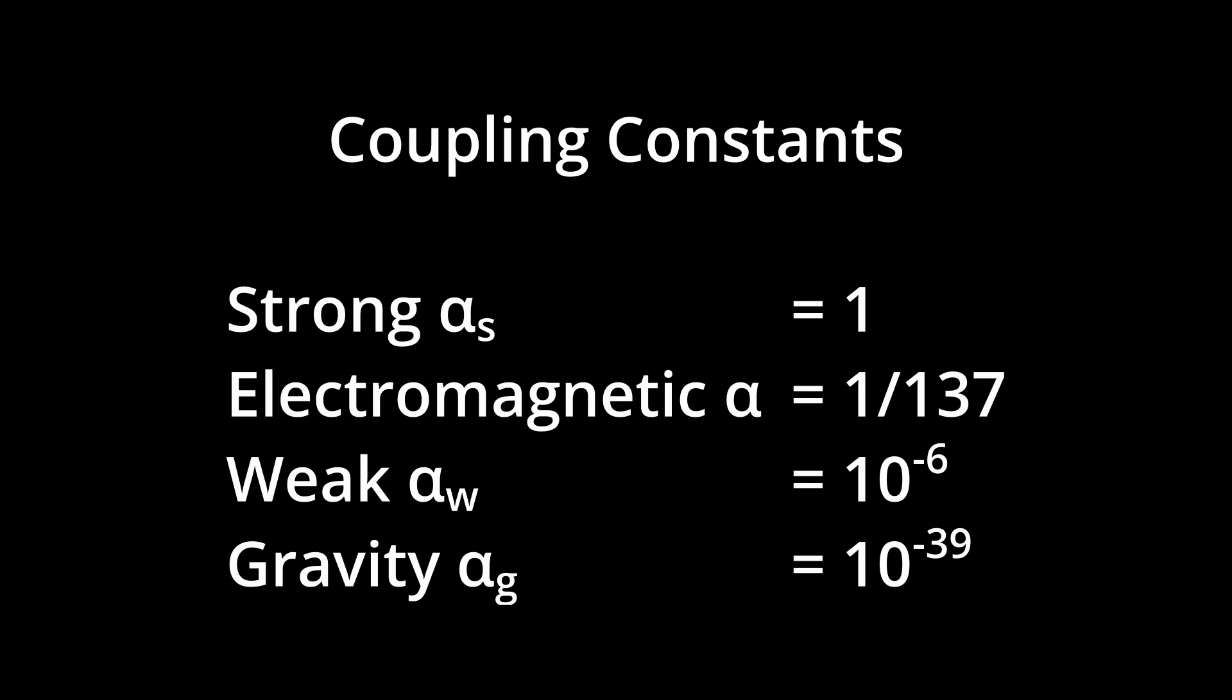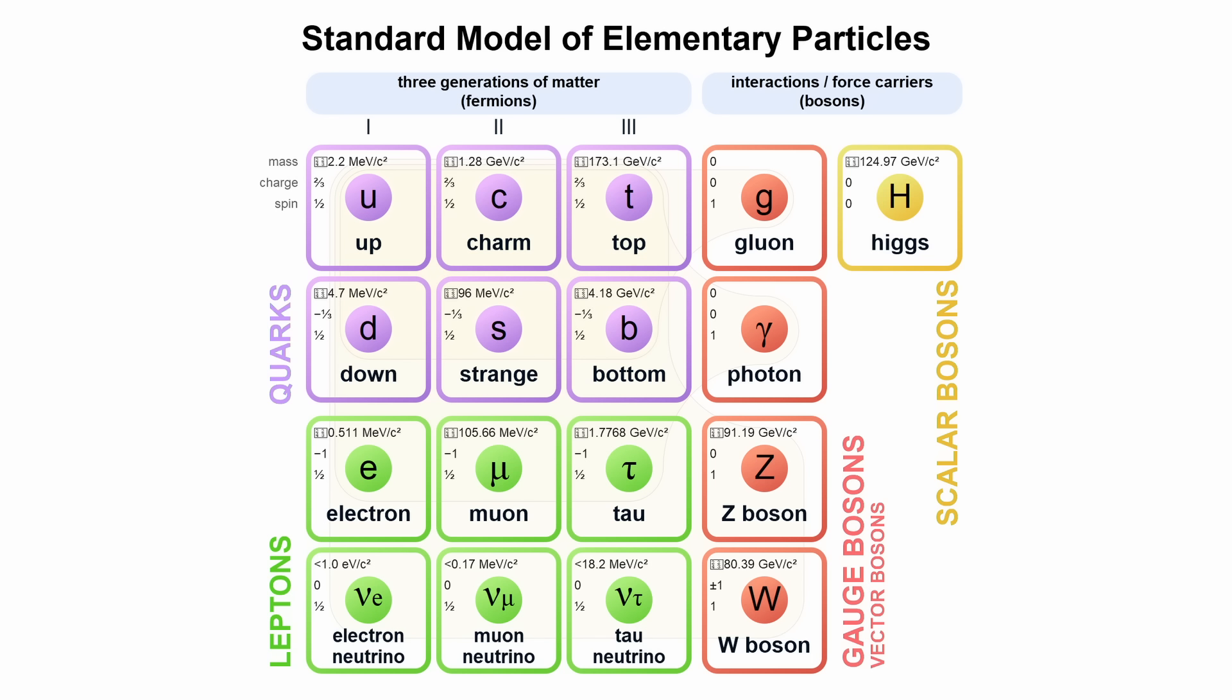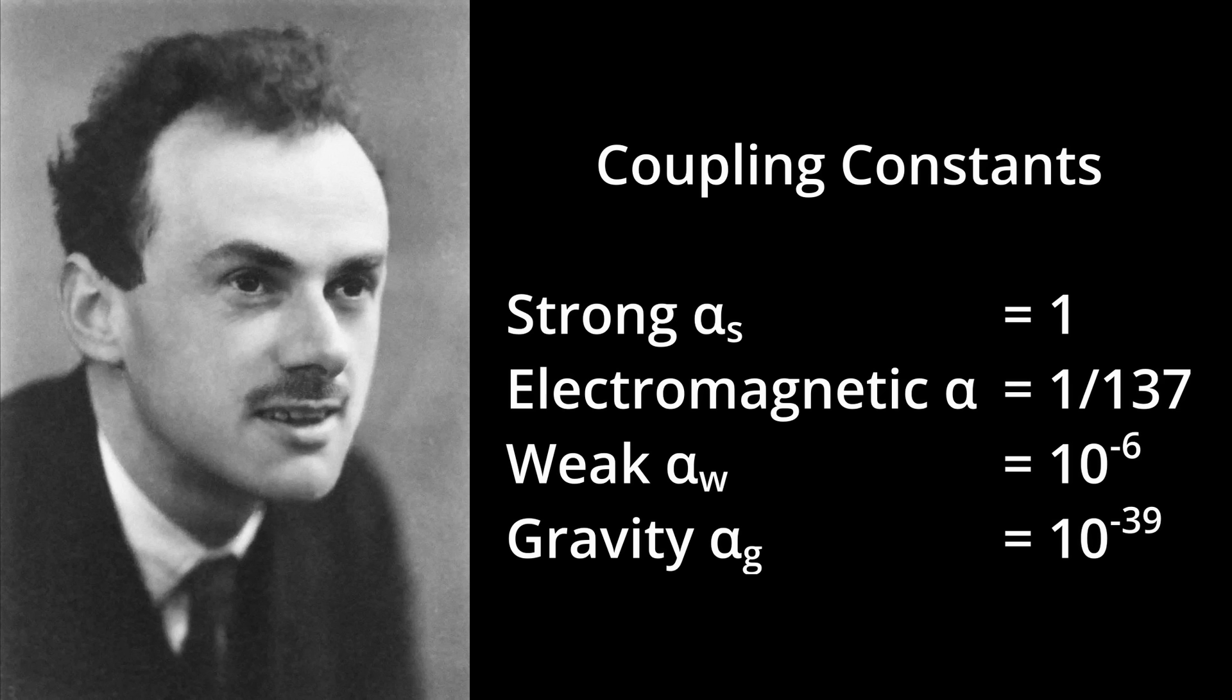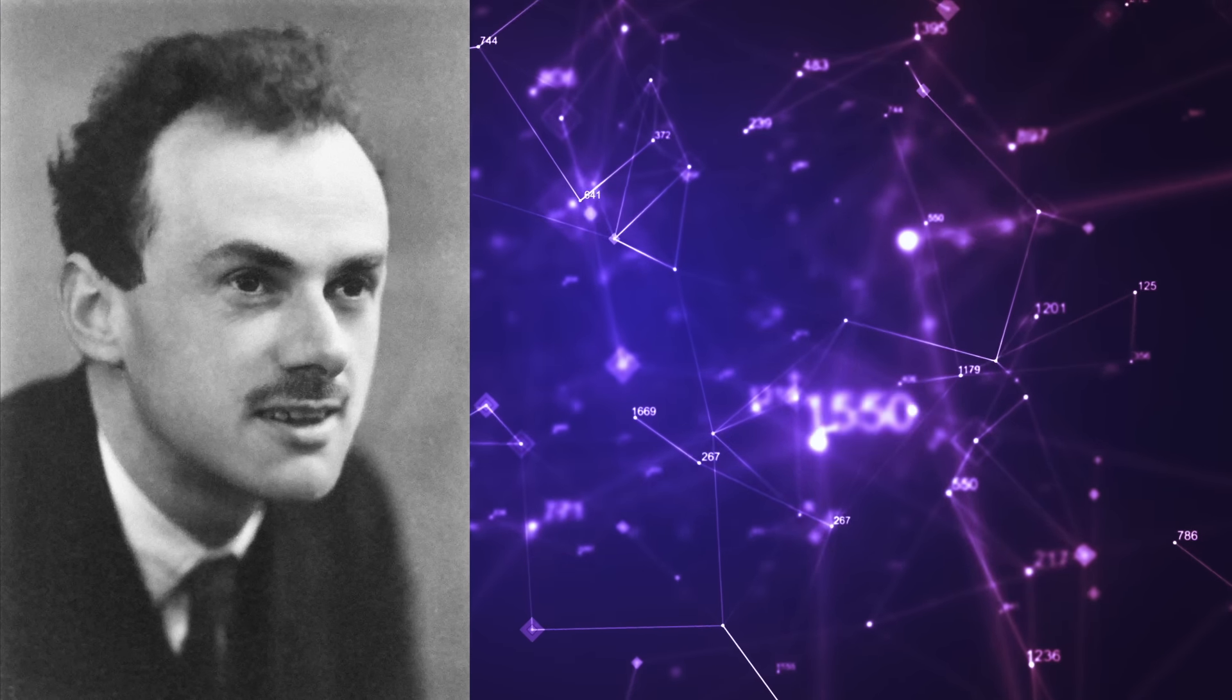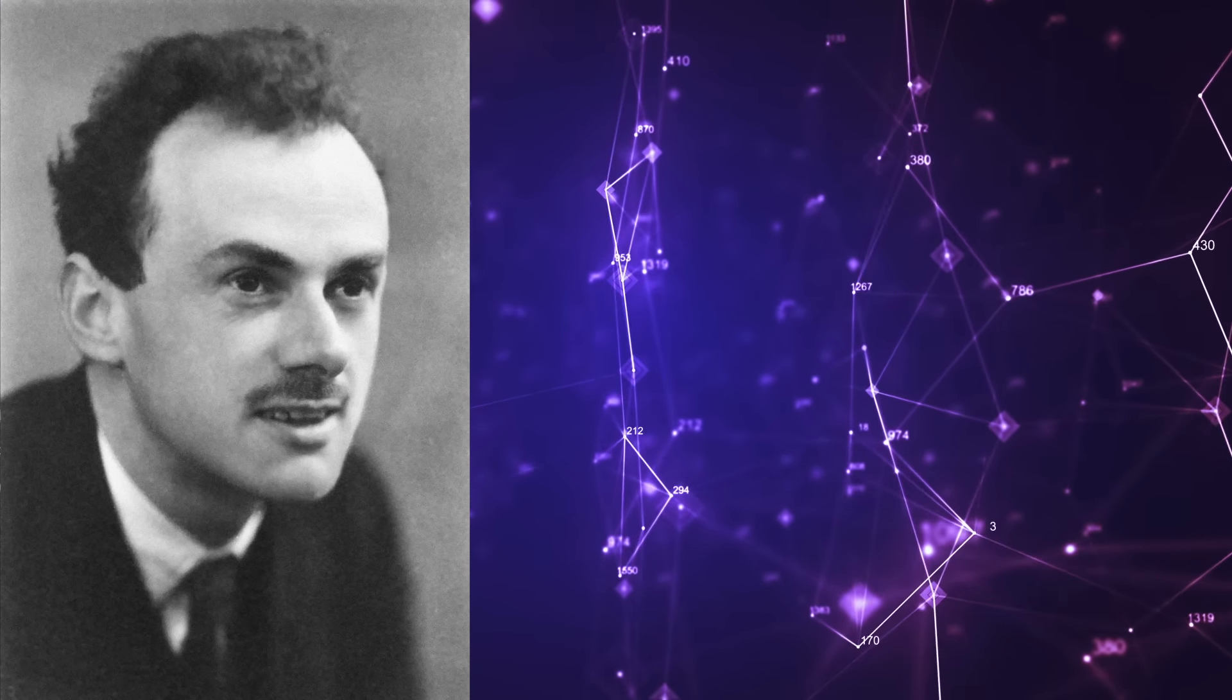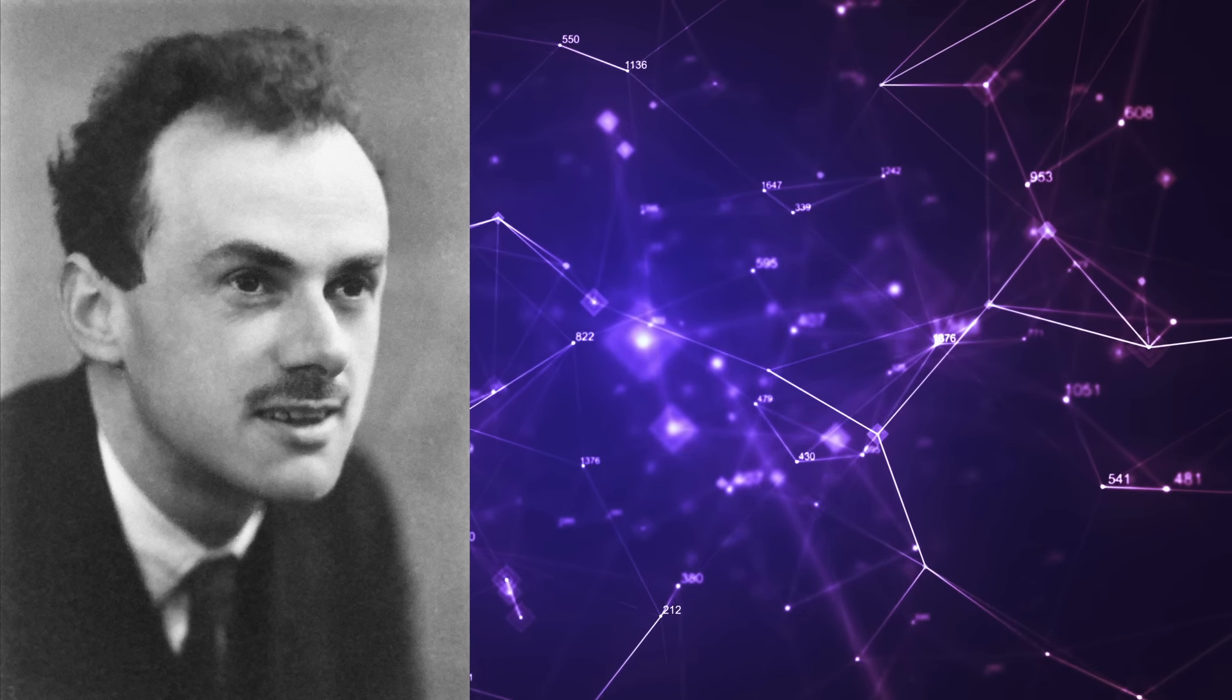In the realm of quantum field theory, coupling constants serve as pivotal metrics, delineating the intensity of interactions among diverse particles through the exchange of force-carrying particles. Dirac proposed the notion that the fundamental constants of nature, such as the coupling constants, might actually vary over space and time. This concept was in line with his broader philosophical outlook, which suggested that the fundamental laws of nature should be simple and elegant, possibly even evolving towards a more elegant state.